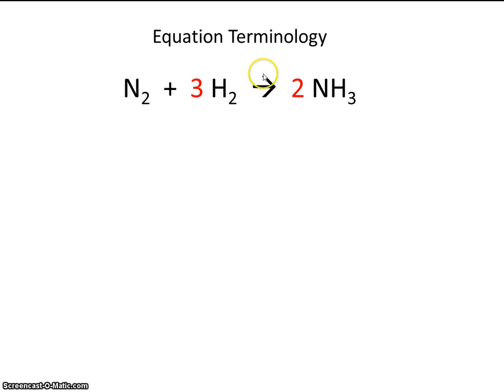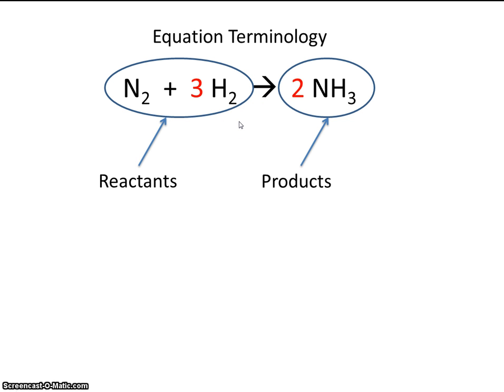The items to the left of this arrow are called reactants, and the items that appear to the right of this arrow are called products. So reactants are on the left, and products are on the right.